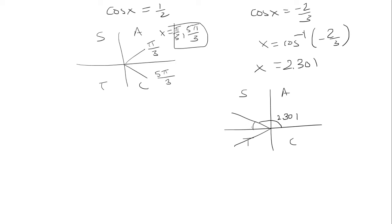So we know that these two angles are going to be congruent. And this entire thing is pi. So the difference goes here. So we know that this also has to be pi minus 2.301.